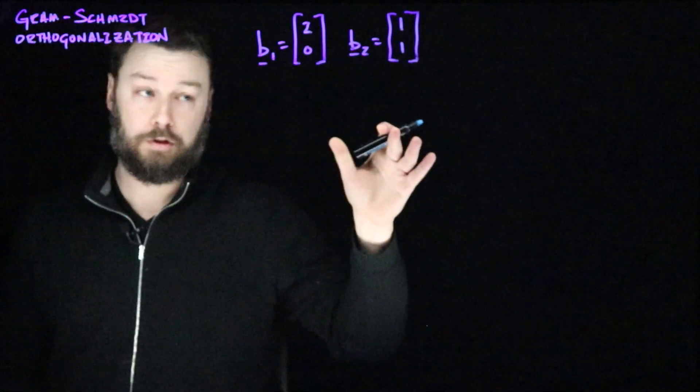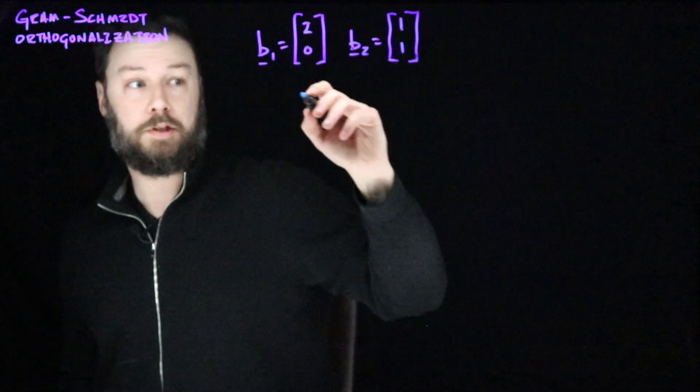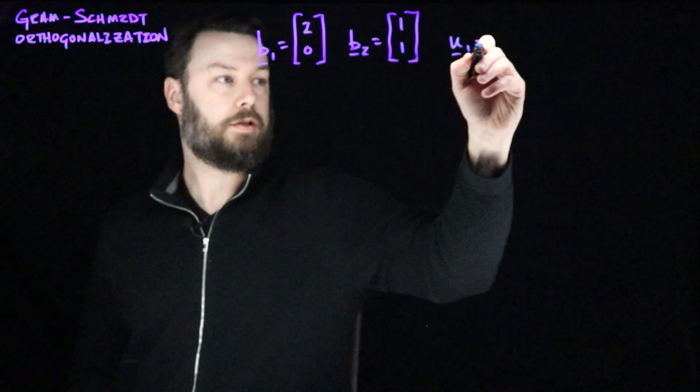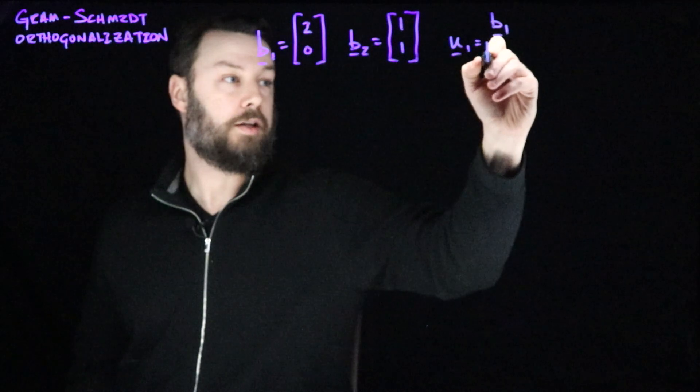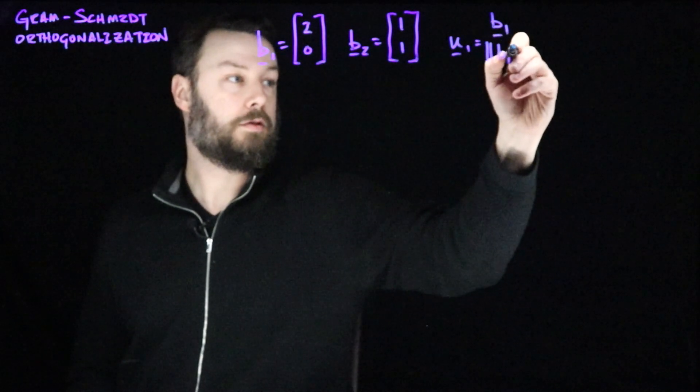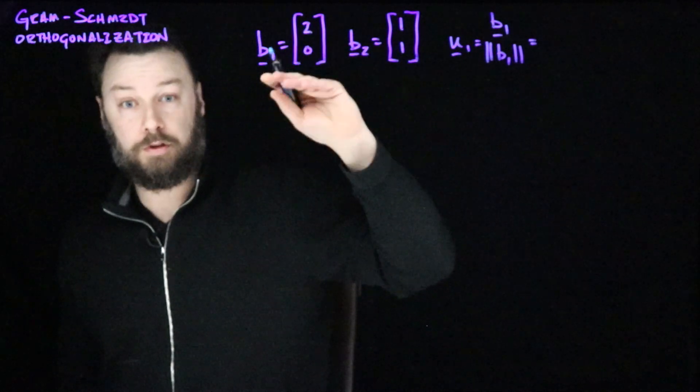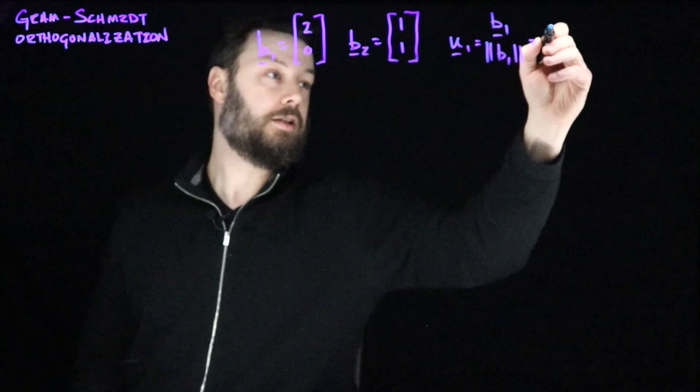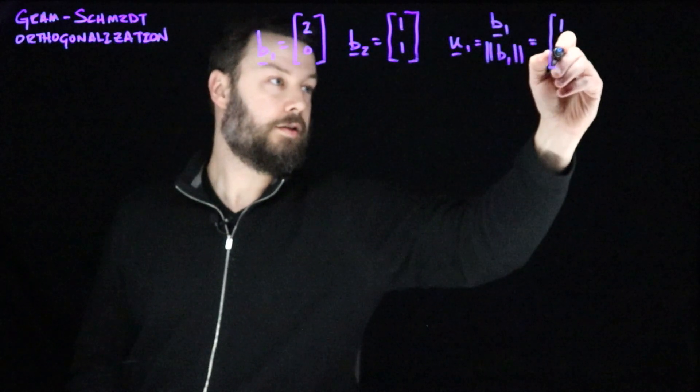Okay, so now we're going to create a u1 and a u2 in this order. The very first thing we do is we normalize b1. We say that u1 is going to be b1 divided by the norm of b1. And so that's pretty straightforward. That's going to be 2, 0 divided by the norm, which in this case is just going to be 2. We're going to get the vector 1, 0.